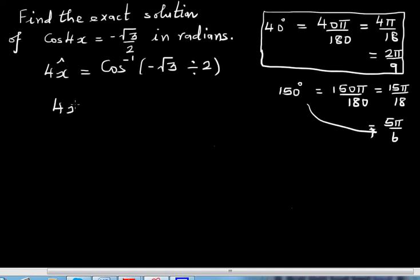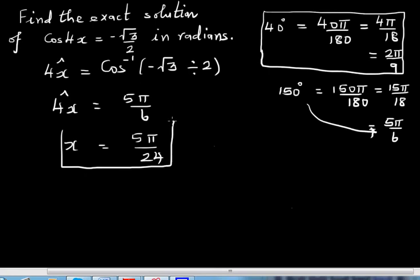Now divide both sides by 4. So x, one of the solutions is 5 pi over 24. And this is the exact solution in radians.